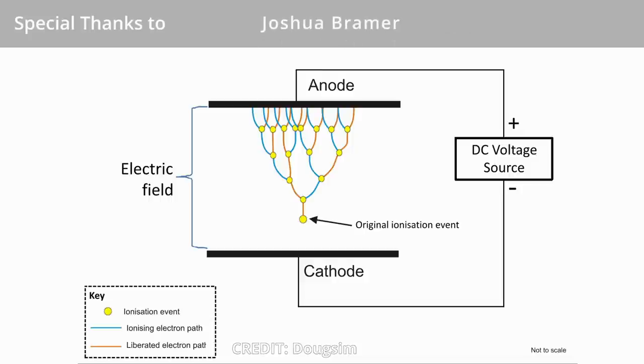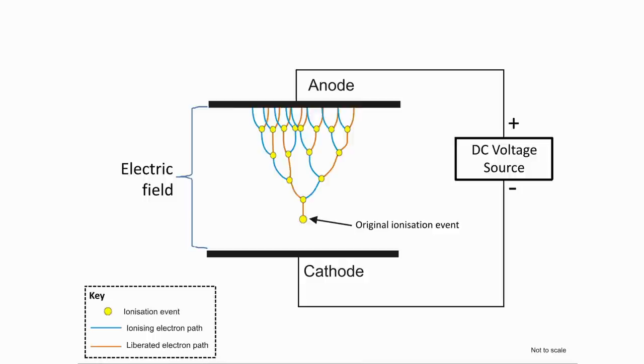An electron leaving the cathode will collide with neutral gas molecules. This collision may just excite the molecule, but sometimes it will knock an electron free to create a positive ion.